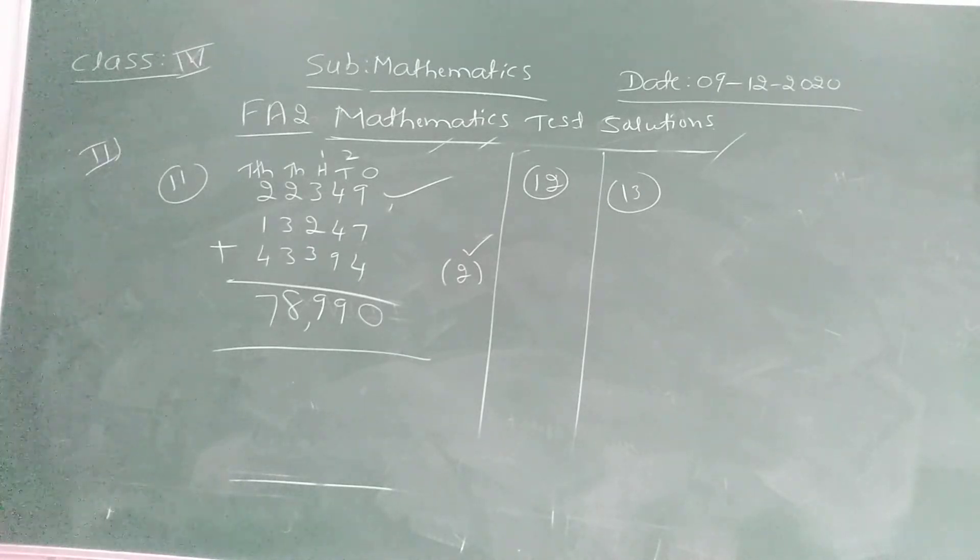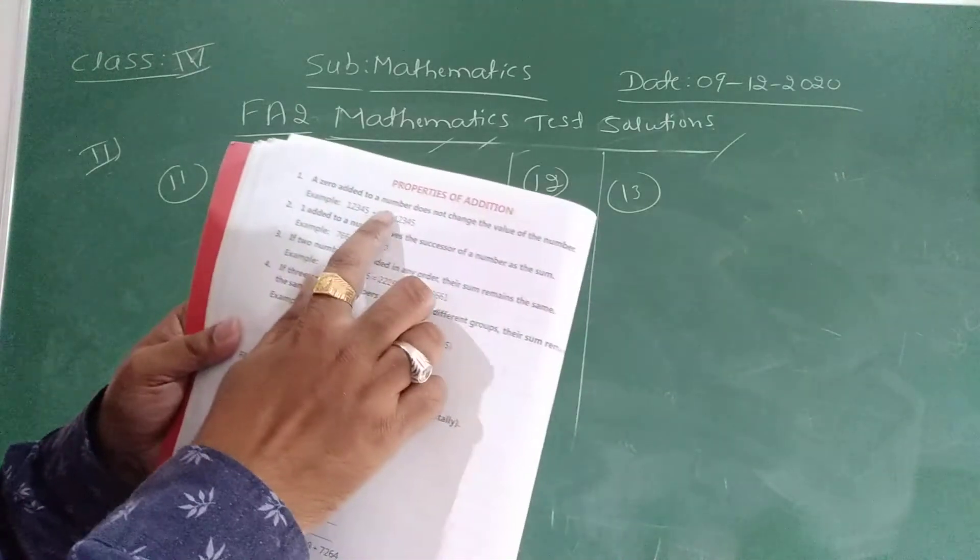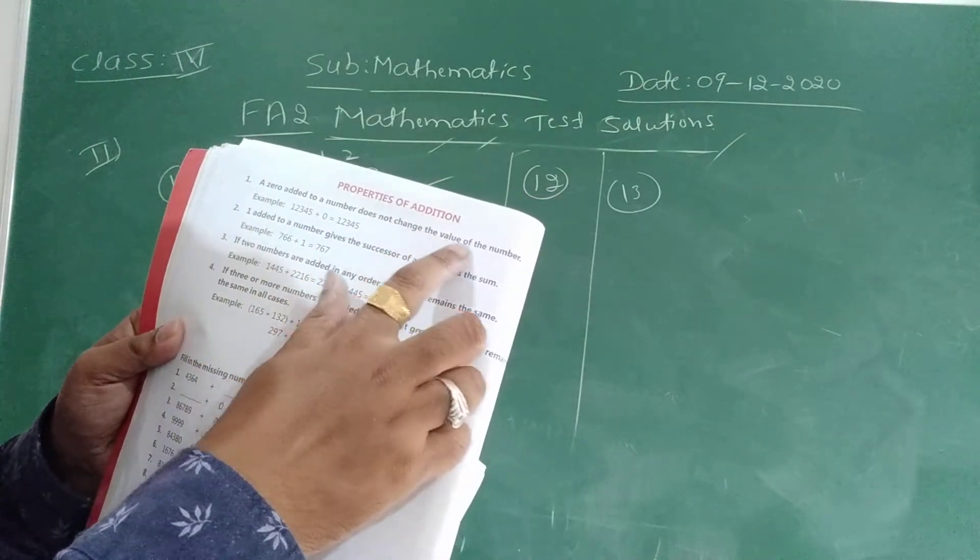What is the first property of addition? Yes. The first property of addition is a 0 added to a number does not change the value of the number.